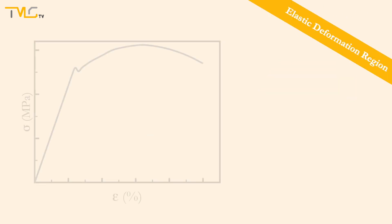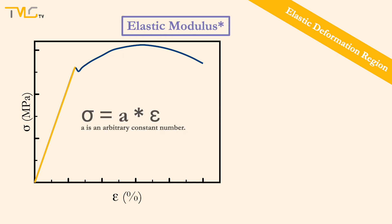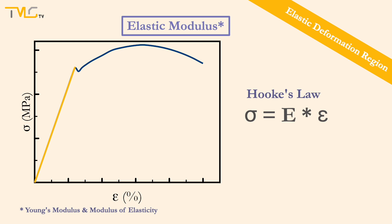In the elastic region, stress and strain values are linearly proportional to each other. One of the important material properties that makes use of this trend is called elastic modulus, also known as Young's modulus and modulus of elasticity. The relationship between stress, strain, and elastic modulus is represented by Hooke's law, which is applicable only for the elastic region of the stress-strain curve.